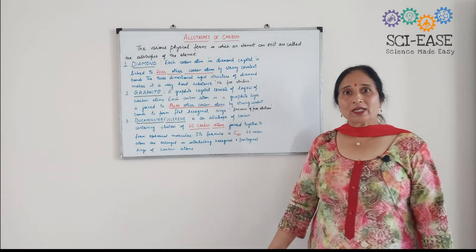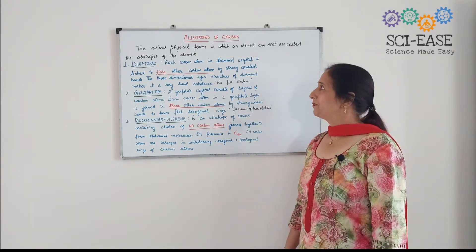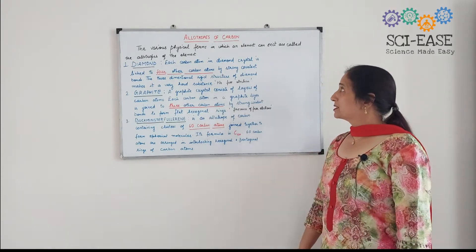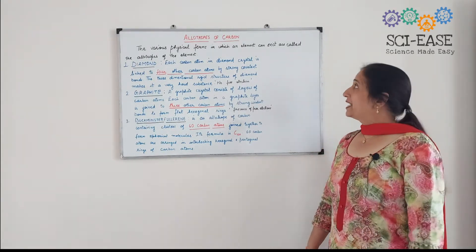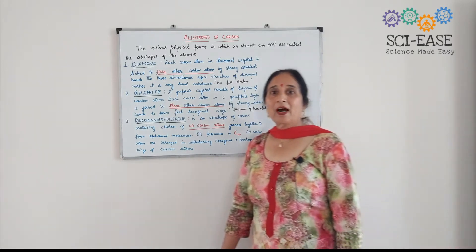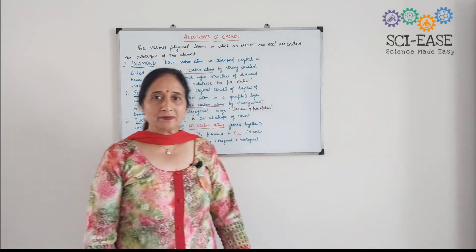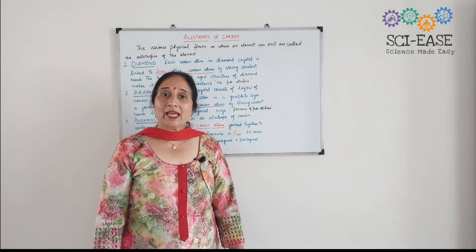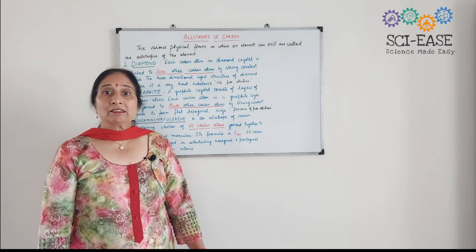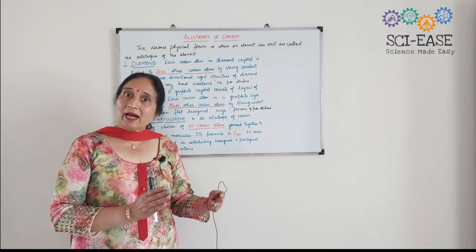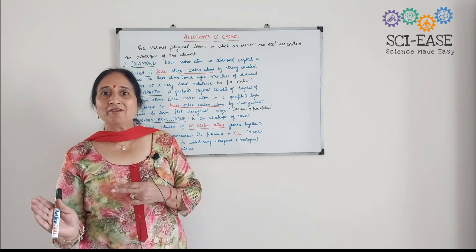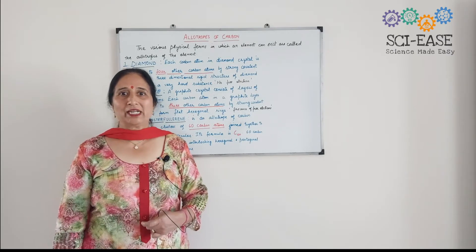First, what are allotropes? The various physical forms in which an element can exist are called allotropes. In allotropes, the physical properties are different, but they have the same chemical properties.